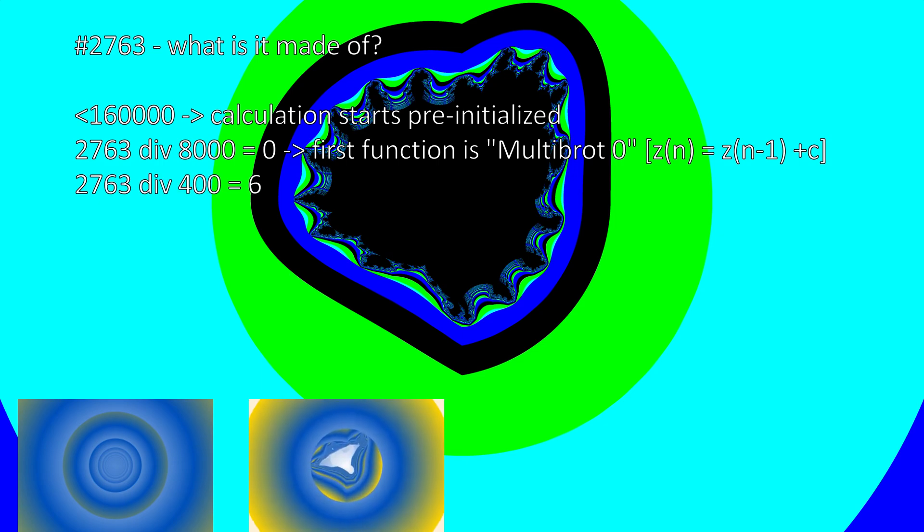But I still owe you an explanation. What is this hybrid made of? 2,763 is smaller than 160,000, that means it starts pre-initialized. 2,763 divided by 8,000 equals zero point something, so the first function used is multibrot zero. This function usually makes the hybrid smaller. 2,763 divided by 400 is six point something, therefore the second function used is burning ship.